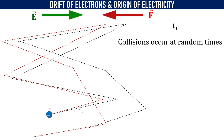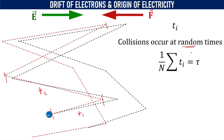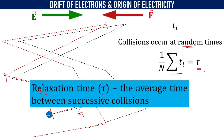Ti represents the time taken between two collisions, and it occurs at random times. For a given electron traveling a shorter distance, the time taken is small; for a larger distance, the time taken is greater. So the time between two collisions is not the same. We need to take the average value, represented as the summation of time taken between all collisions divided by the number of collisions. This is represented by the Greek letter tau, which is the average time between any two successive collisions — also called relaxation time.